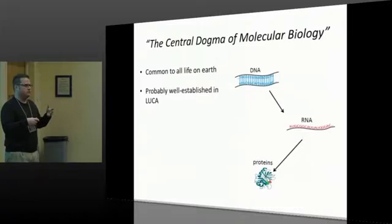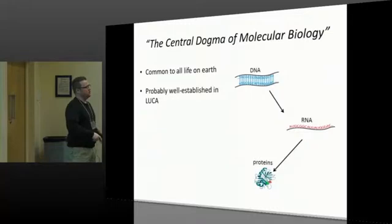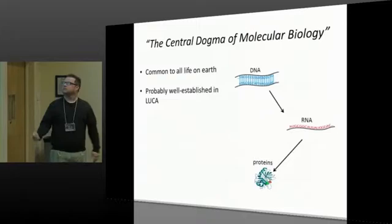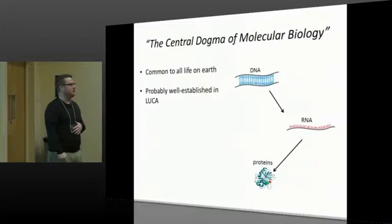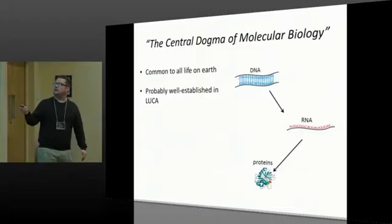One thing we look at when trying to figure out the traits of the last universal common ancestor are things that are common to all of life today. This is the central dogma of molecular biology — this is why our bodies work, and it's common to all life on Earth. You have double-stranded DNA, which is our long-term information storage. It gets copied into RNA in a process called transcription. RNA is sort of the short-term memory of life, and it carries that information to a complex that makes proteins. Proteins do the majority of the work in your body. Because this is common to all life on Earth, we can probably say it was well established in the last universal common ancestor.